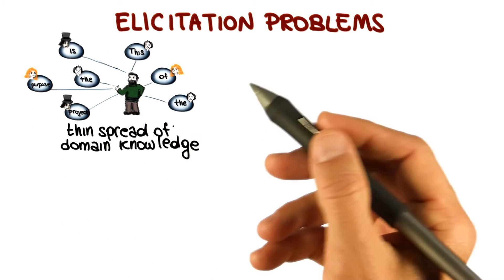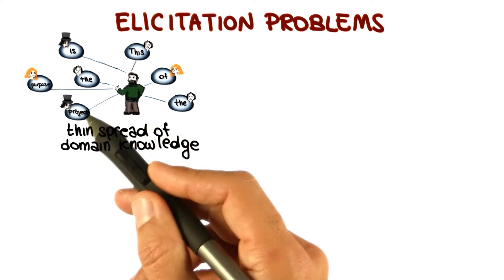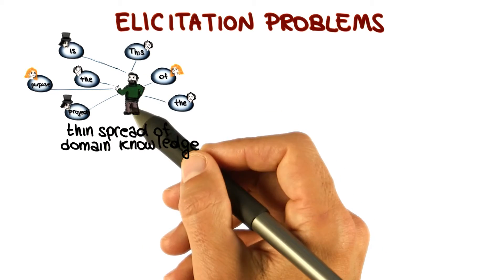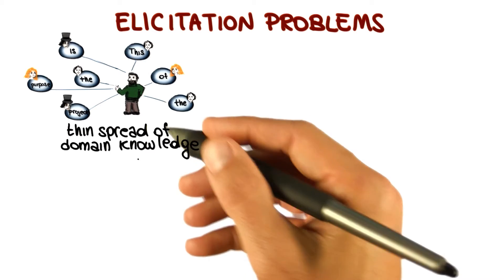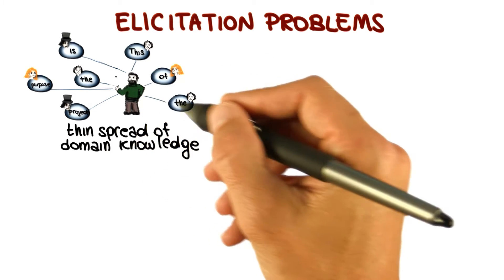For example, in the graphical depiction here, to find out that this is the purpose of the project, the developer, the analyst, needs to talk to a lot of different people. And to make things even worse, there are often conflicts between the knowledge gathered from different sources.